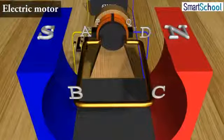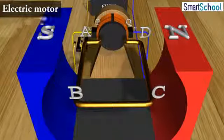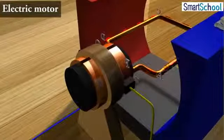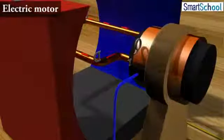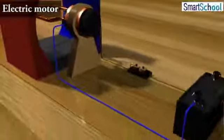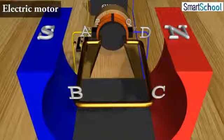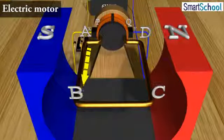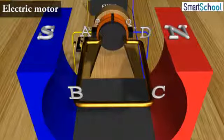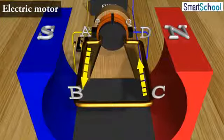Current in the coil ABCD enters from the source battery through conducting brush X and flows back to the battery through brush Y. Notice that the current in arm AB of the coil flows from A to B. In arm CD, it flows from C to D, that is, opposite to the direction of current through arm AB.